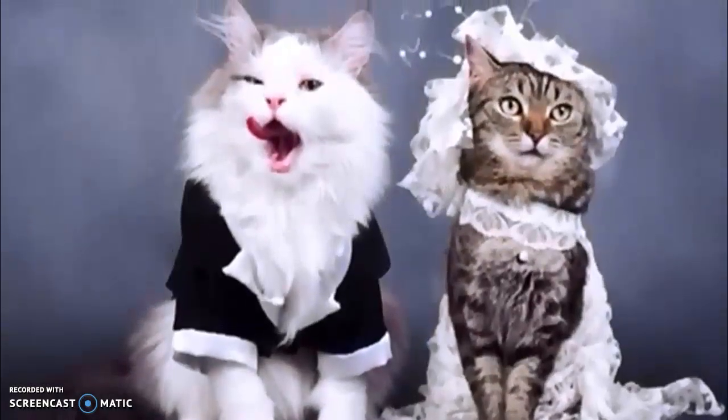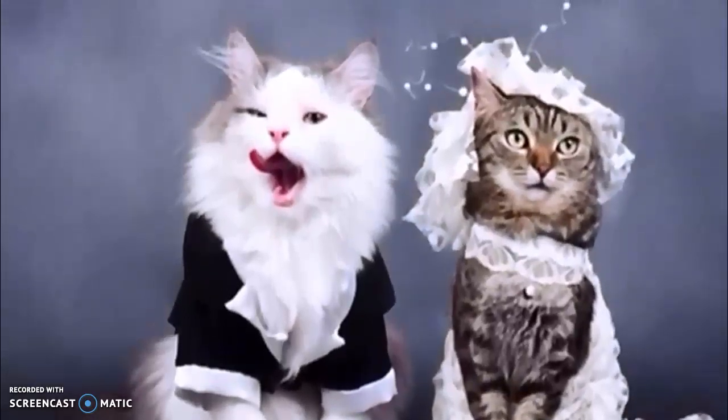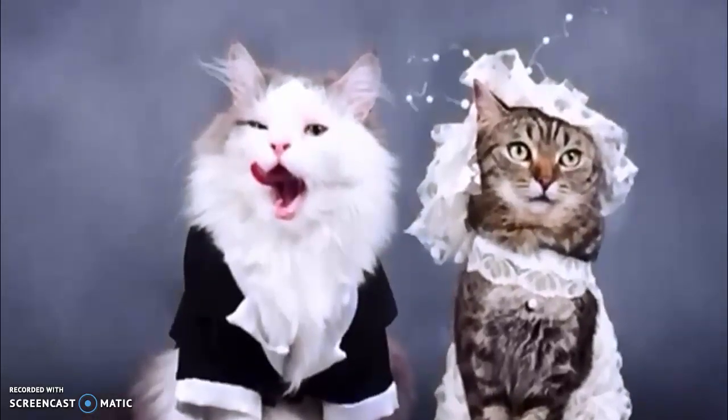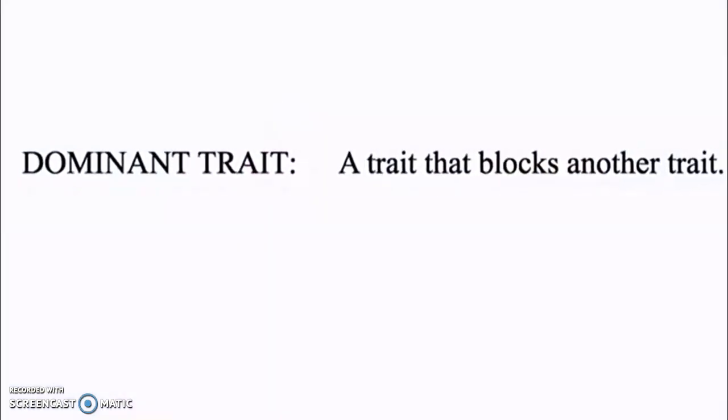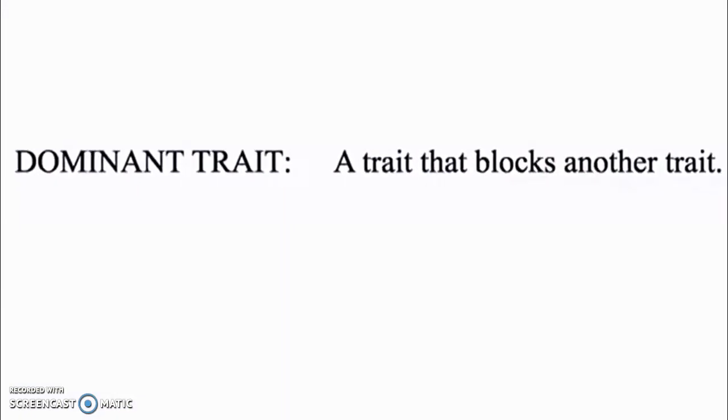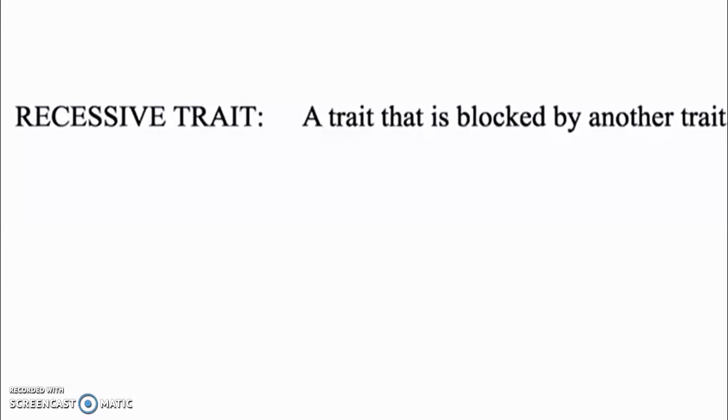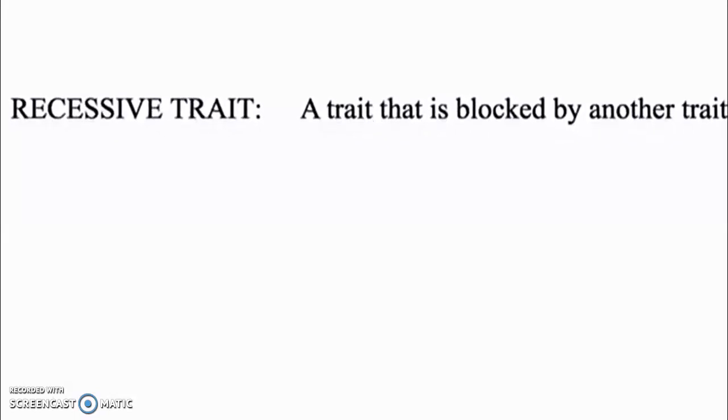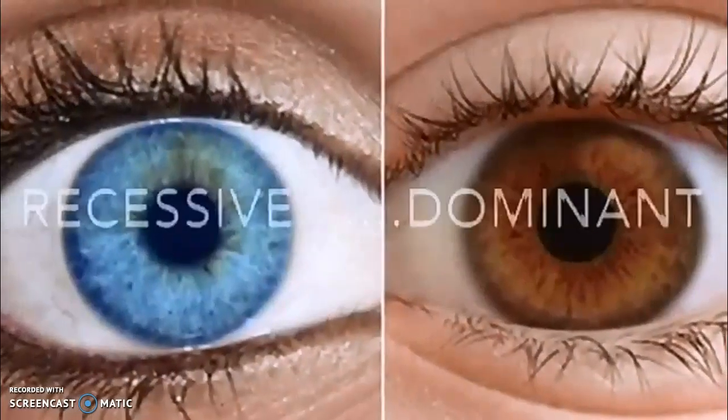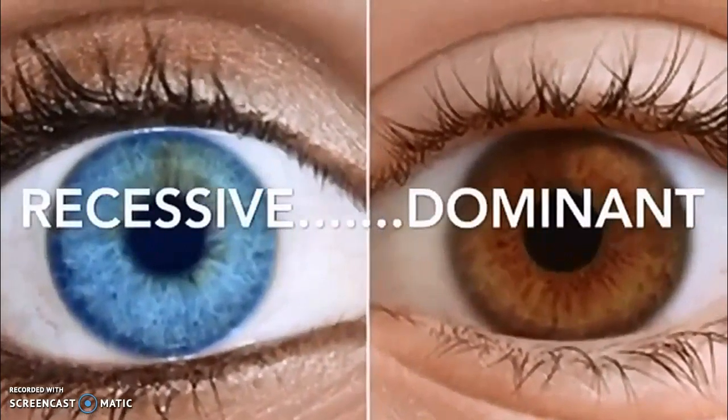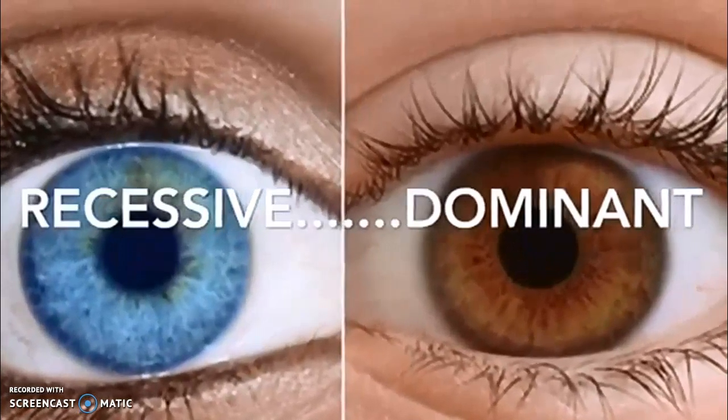So if mom shows off gray fur and dad is all white, will kitten's fur color be the trait who wins a fight? Well, kind of. Dominant trait. A trait that blocks another trait. If you inherit at least one, that trait is a go.